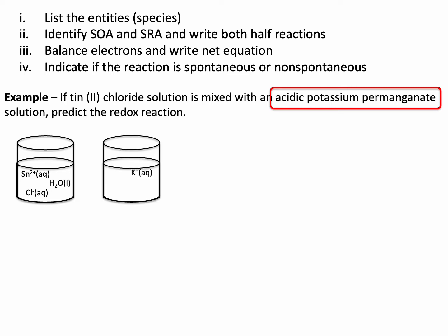The other beaker is acidic potassium permanganate. So potassium permanganate is KMnO₄, but it splits up to K⁺, MnO₄⁻. We know that there has to be water in there, and it also says acidic, and you should know from the last unit that means we have H⁺ present.